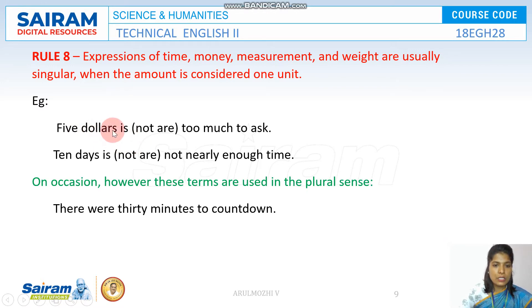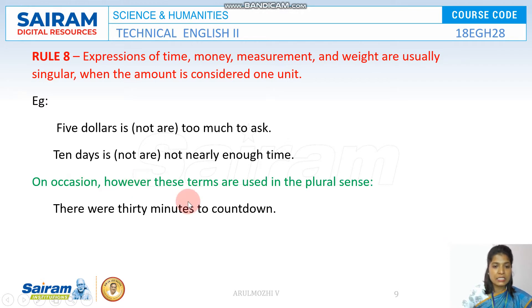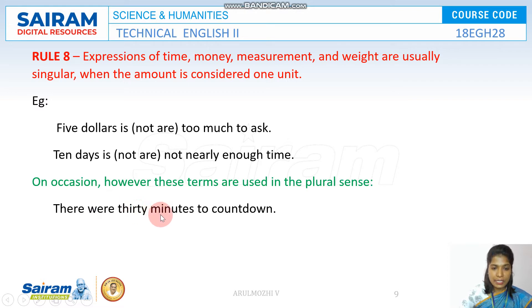For example: 'Five dollars is too much to ask.' 'Ten days is not nearly enough time.' On special occasions, like when you count minutes one by one, they are individually counted, so you use a plural verb.